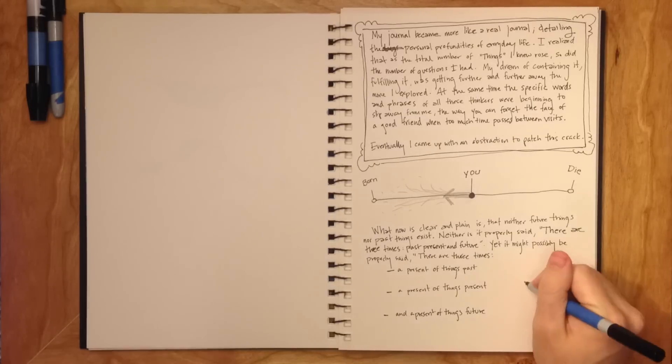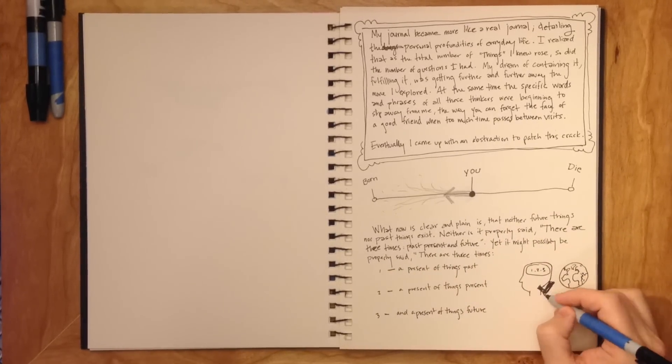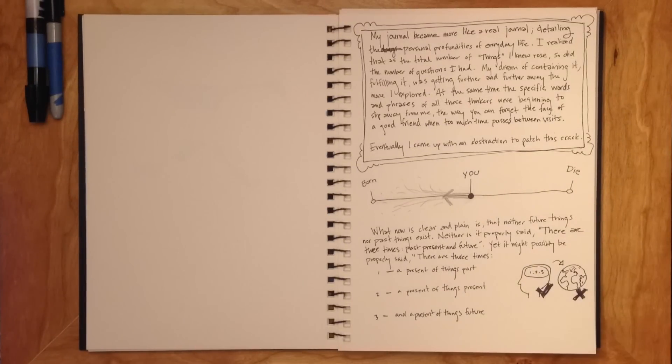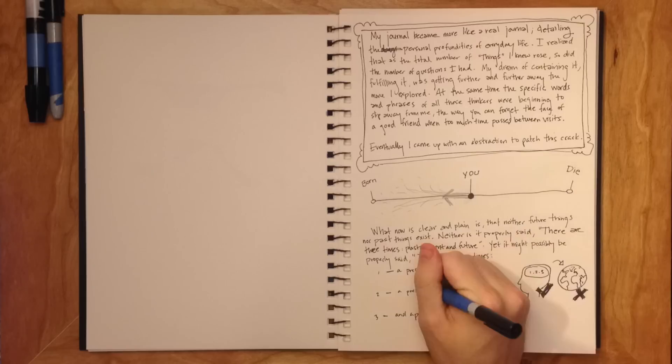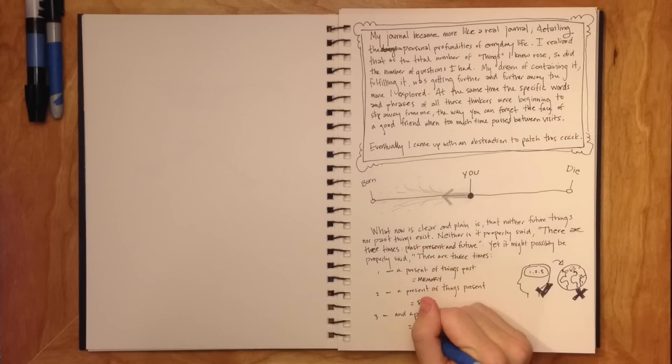For these three things do exist in some way in the mind, but I do not see them elsewhere. The present of things past is memory. The present of things present is sight. The present of things future is expectation.